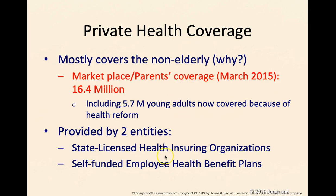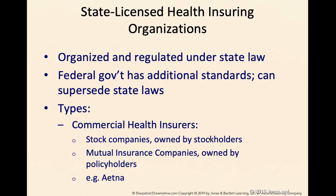Private health coverage is provided and regulated by two entities. One is covered or regulated by the state — these are called state-licensed health insuring organizations. The second are the self-funded employee health benefit plans, which are governed by the federal government. State-licensed health insuring organizations are organized and regulated under state law. The federal government has additional standards, but it's usually whichever of the two has more stringent rules that is followed.